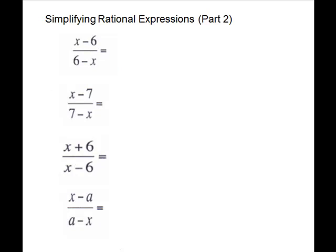So let's look at a few problems and see if we can recognize opposites. For our first problem, x minus 6 over 6 minus x. These are opposites. They have opposite signs. Positive x, negative x, negative 6, positive 6. So this is equal to negative 1.